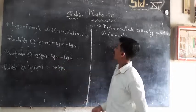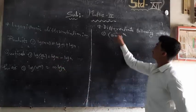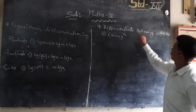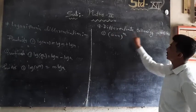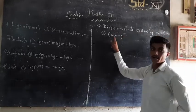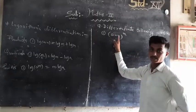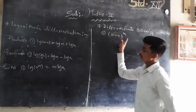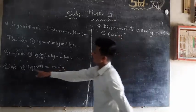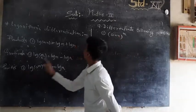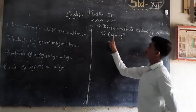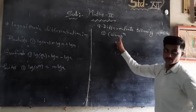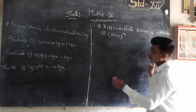Now we will take an example: differentiate the following with respect to x — sin(x) raised to x. Here we identify which type this is: it is a power of a function, sin(x)^x.